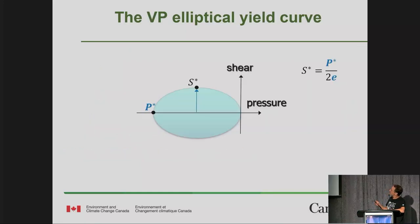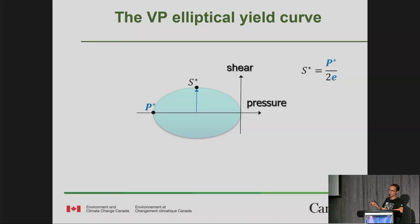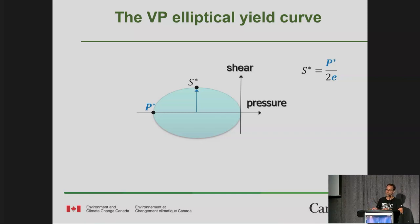Quickly — this is the viscous plastic elliptical yield curve. The ellipse characterizes the critical stresses that can be sustained by the ice. When the internal stress inside the ice cover reaches the yield curve, the ice fails in tension, shear, or compression, or a mix. For our experiments, we vary P*, the compressive strength — if we just vary P*, the ellipse has the same shape but is bigger, so we test bigger P* than the standard value. We also vary E, the ellipse aspect ratio: if E decreases, the ellipse tends toward a circle and has larger shear strength.